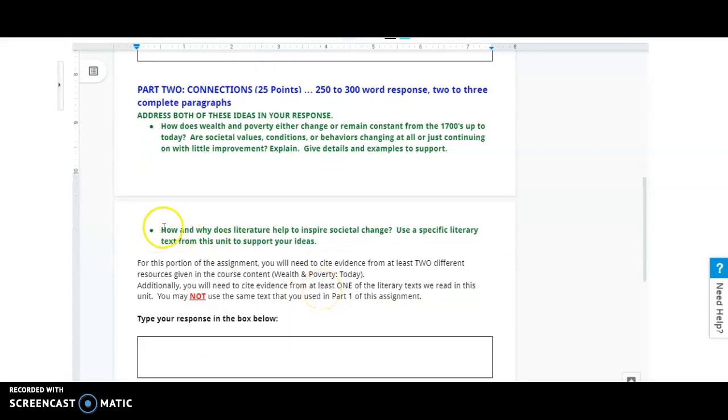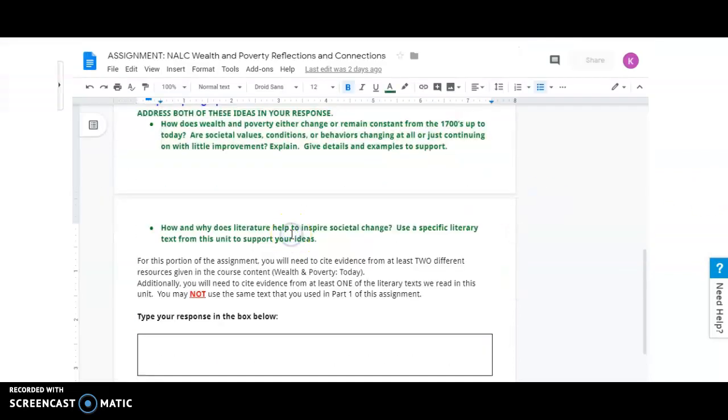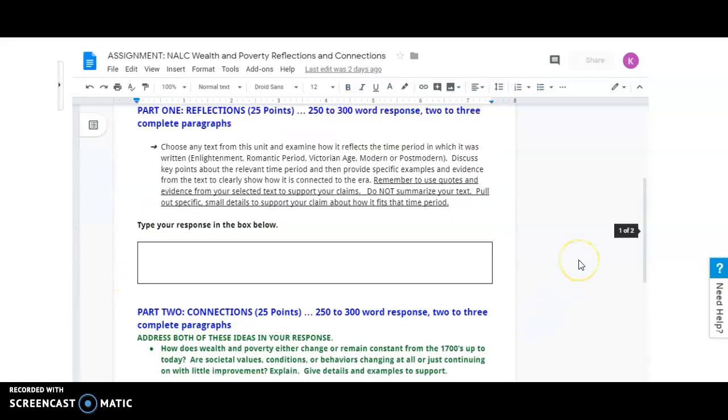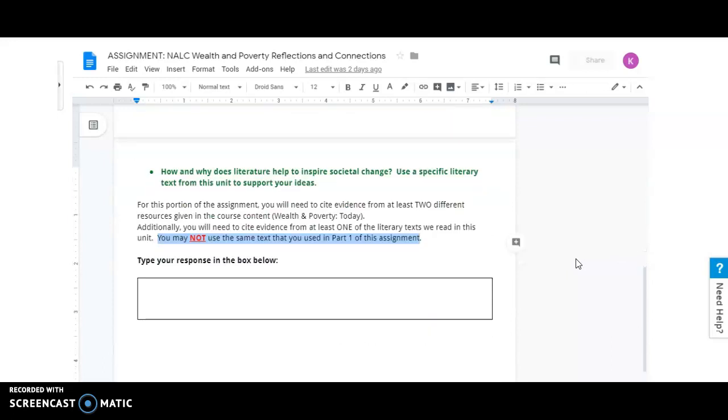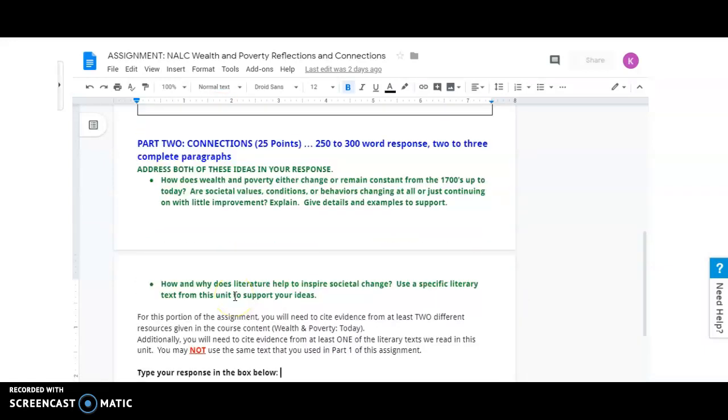And then you'll also have to answer the idea, my computer went a little crazy there. How and why does literature help to inspire societal change? Use a specific literary text from this unit to support your ideas. So, you may not use the same text you used in part one of this assignment. So, you'll need to use a second text to support your ideas for this response. And again, you'll need those in-text citations, those MLA in-text citations.